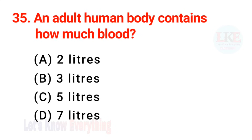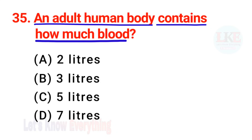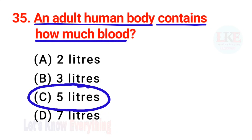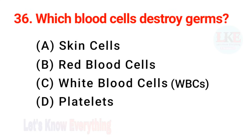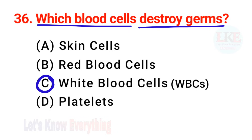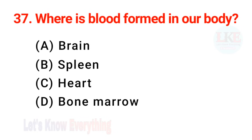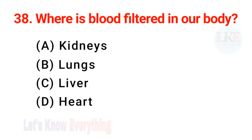Question number 35: an adult human body contains how much blood? Right answer — 5 liters. Question number 36: which blood cells destroy germs? Right answer option C — white blood cells. Question number 37: where is blood formed in our body? Right answer option D — bone marrow. Question number 38: where is blood filtered in our body? Right answer option A — kidneys.